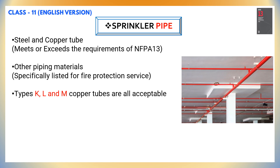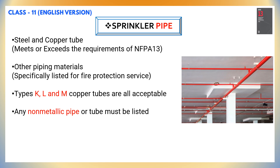Types like K, L, and M copper tubes can also be used as sprinkler piping. However, project specifications must be referred to prior to taking approval from the consultant or client. Any non-metallic pipe or tubes must be listed. As per NFPA 13, any kind of non-metallic pipes or tubes can be used, but they must be listed.